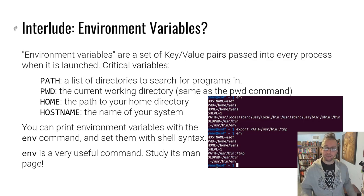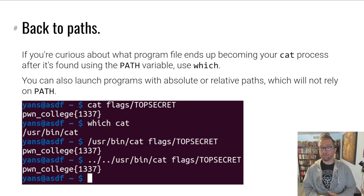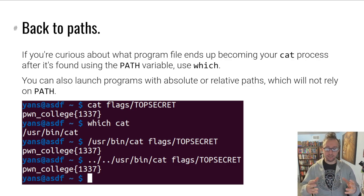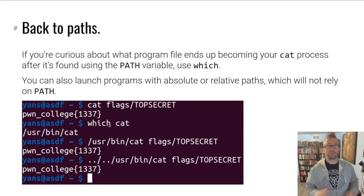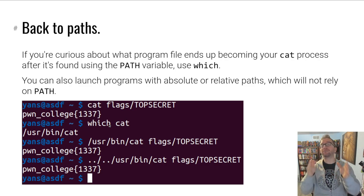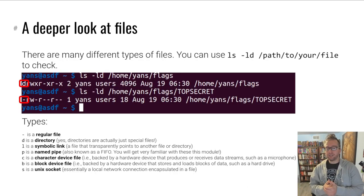For example, you can change the PATH environment variable to make the shell search for cat in a different place. If you're curious about where your shell will actually find a given program — what actual binary will end up being executed — you can use the which command. It searches through your PATH environment variable and returns the file system path of the command wherever it finds it.